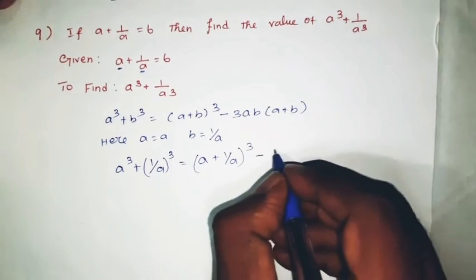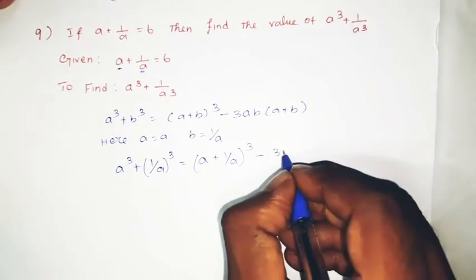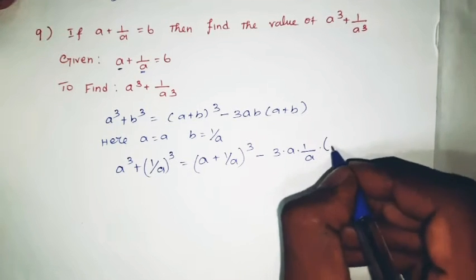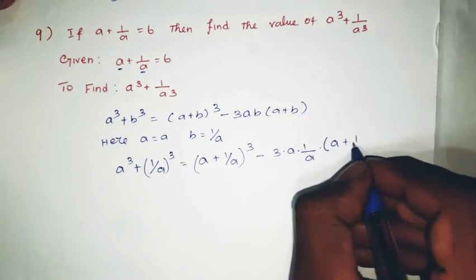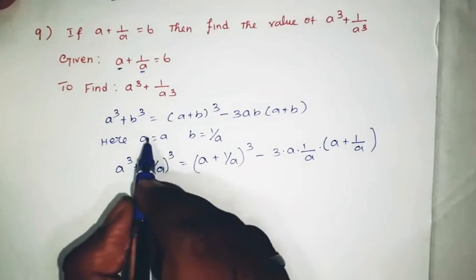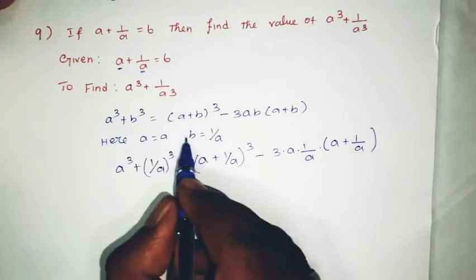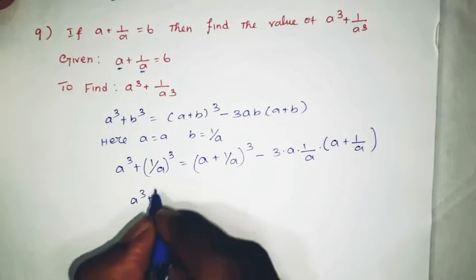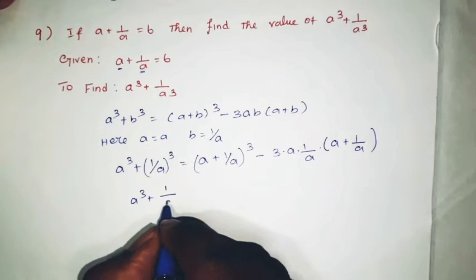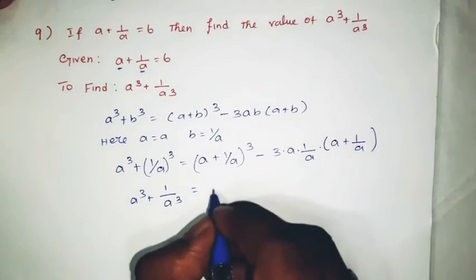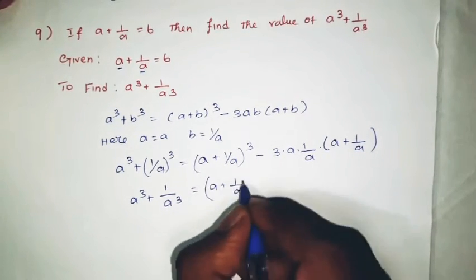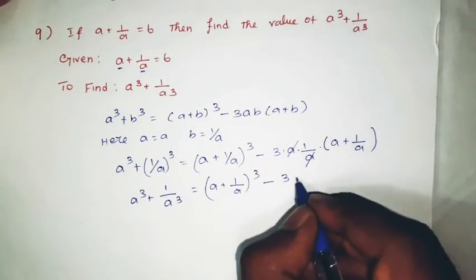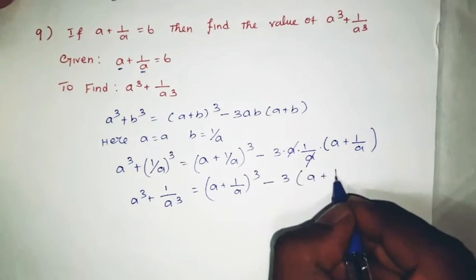Equals (a plus 1 by a) whole cube minus 3 into a into b, which is (a plus 1 by a). So a cube plus 1 by a cube equals (a plus 1 by a) whole cube minus 3, and the a cancels, so minus 3 into (a plus 1 by a).